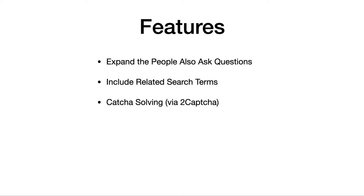The bot also supports CAPTCHA solving, but this is optional. When Google requires you to solve a CAPTCHA, you can just stop the bot, wait a few minutes, and run it again. For five to ten keywords, this usually isn't an issue. But for 20 or 30 keywords at once, Google may require CAPTCHA. If you have a 2Captcha account and don't want to wait, the bot can solve the CAPTCHA automatically and continue grabbing People Also Ask questions.